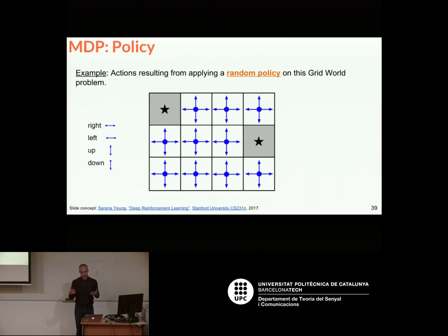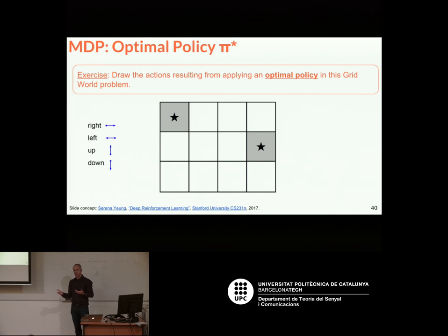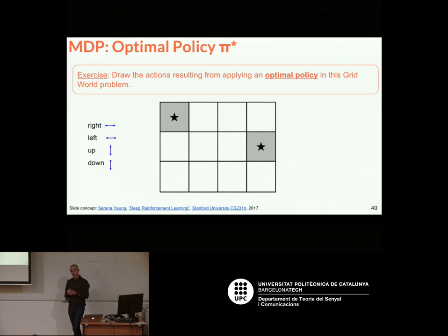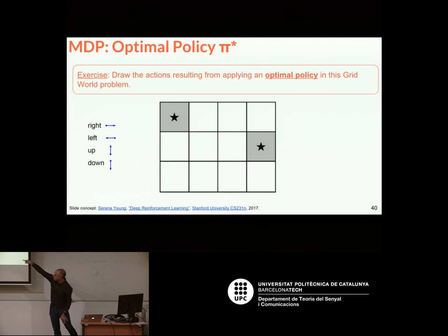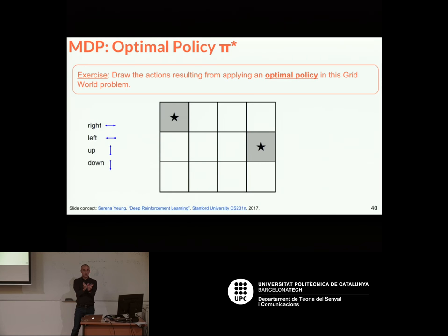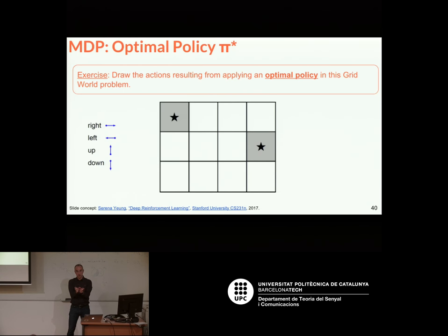What would be the optimal policy? I'll give you one minute to decide. You have to consider each and every state and draw arrows — right, left, up, down — which are the actions that will be considered in the optimal policy. There might be more than one. Some states have more than one action that is part of the optimal policy.